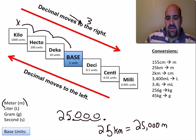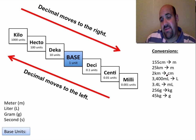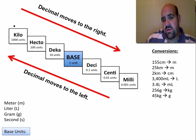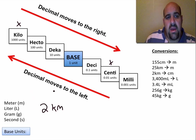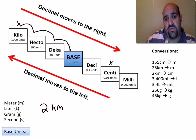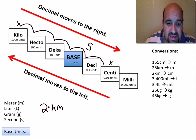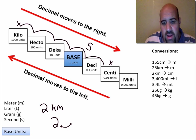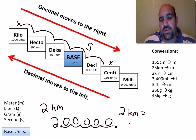Let's do one that's not a base unit. We're going from 2 kilometers to centimeters. We're starting up at kilo and going all the way down to centi — that's a lot of steps. We go down one, two, three, four, five places. The decimal moves five places to the right. We take the 2 and move the decimal one, two, three, four, five places, putting in zeros. So two kilometers equals 200,000 centimeters.